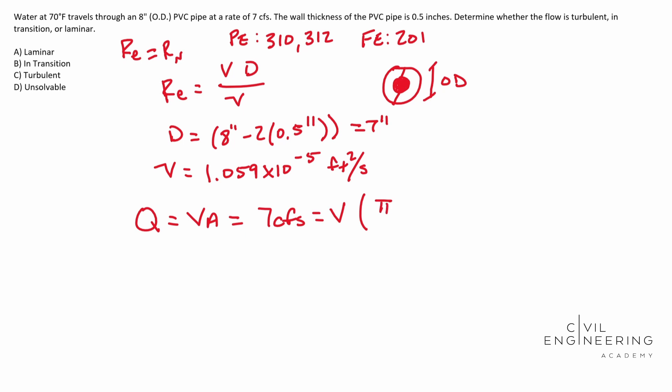So in this case we're going to do pi times d which is 7 inches. Let's convert that to feet real quick and divide it by 12. Pi d squared over 4. Okay so there's your area, cross-sectional area. Whenever you solve for V you end up with 26.19 feet per second.